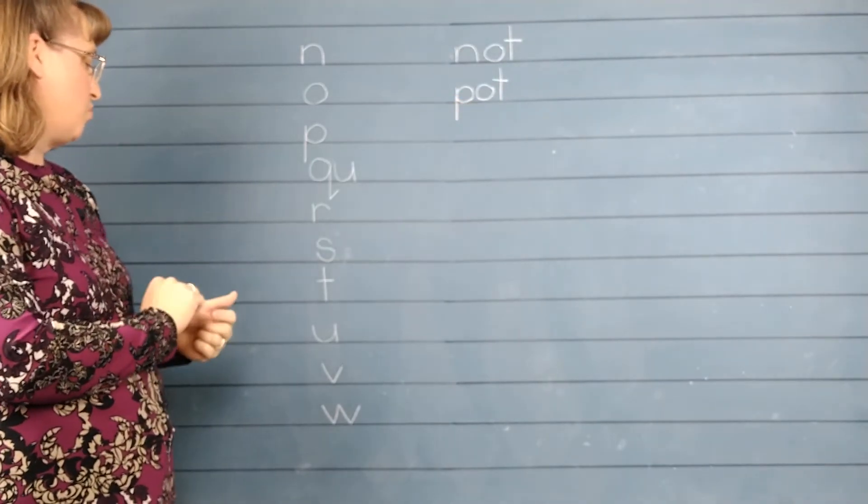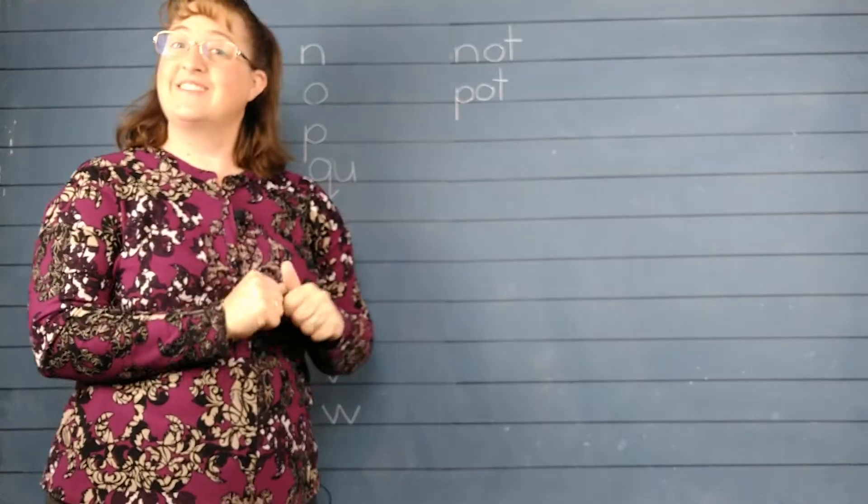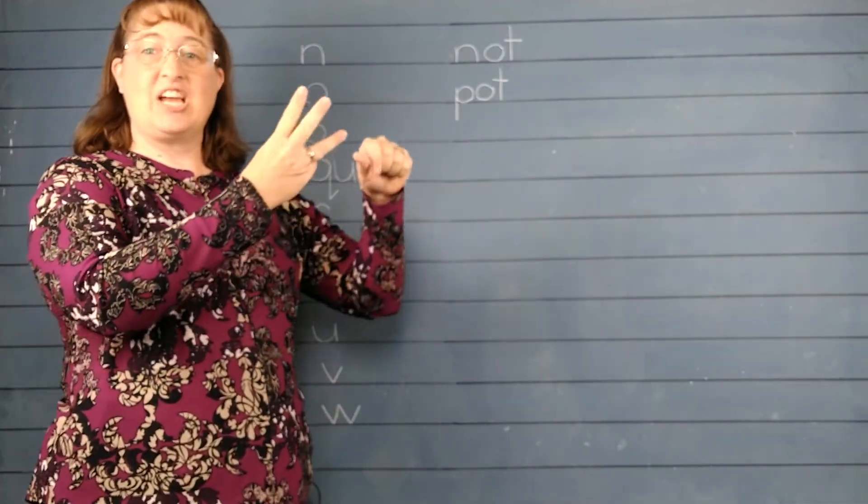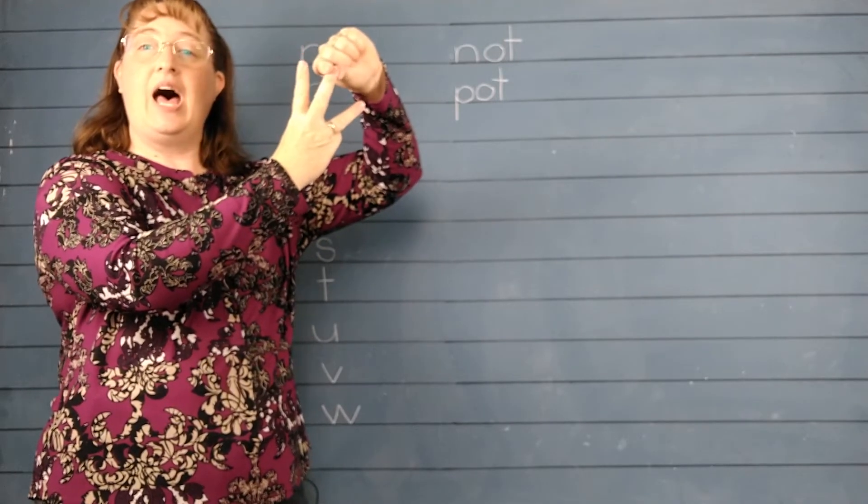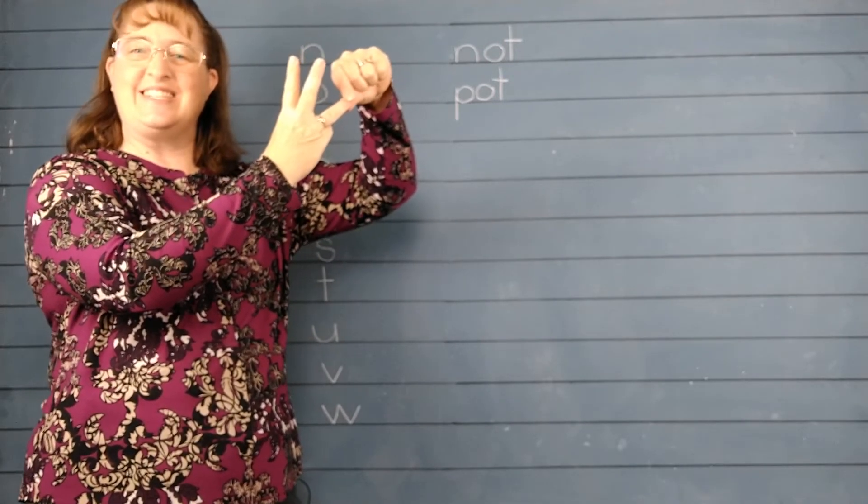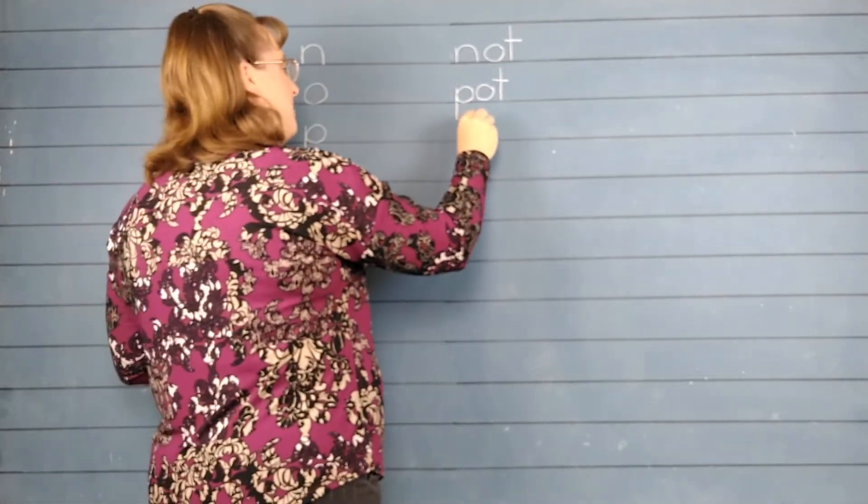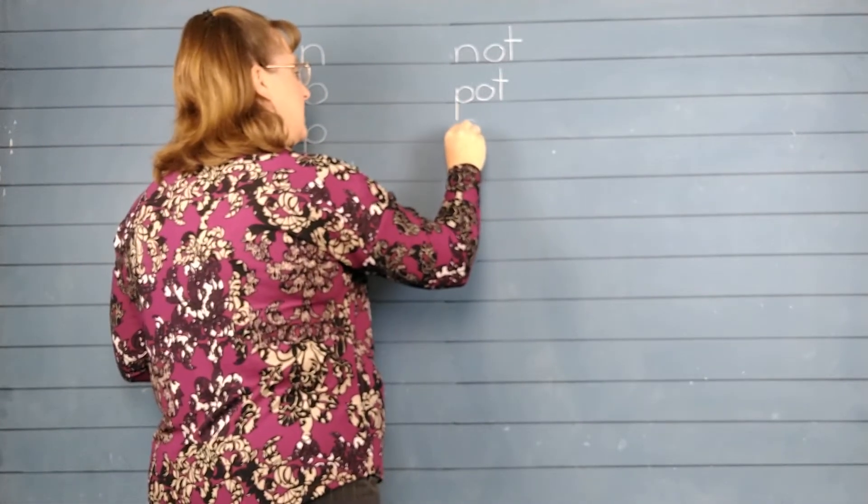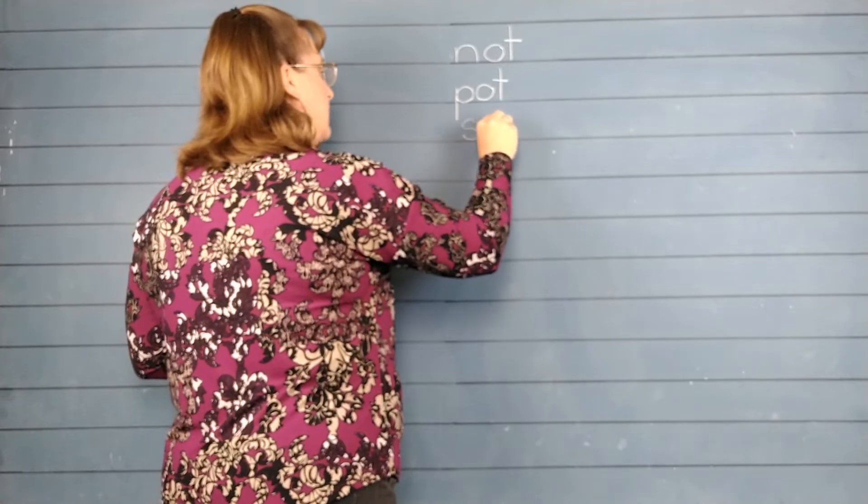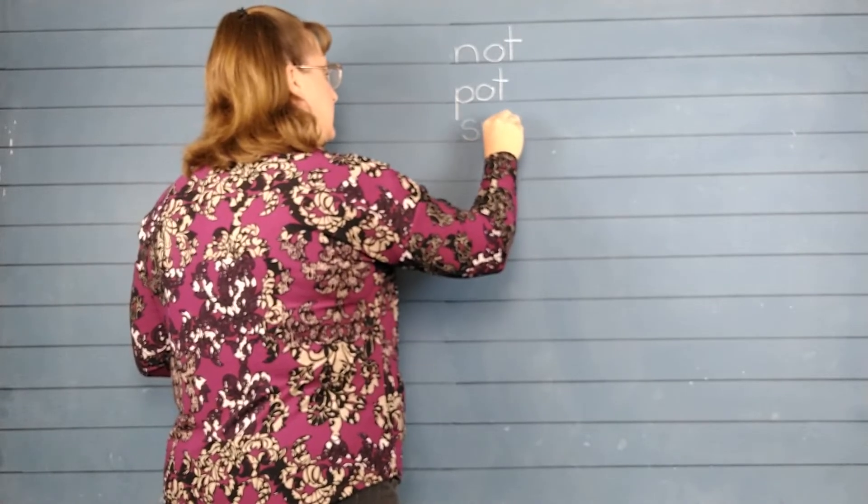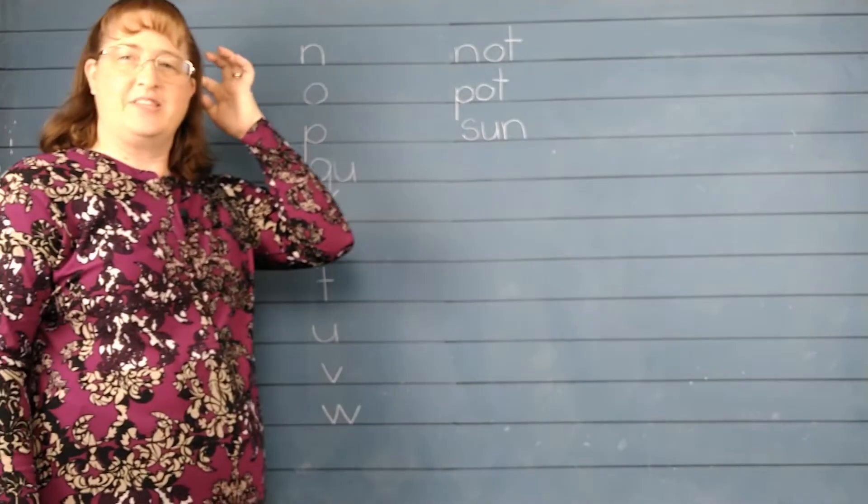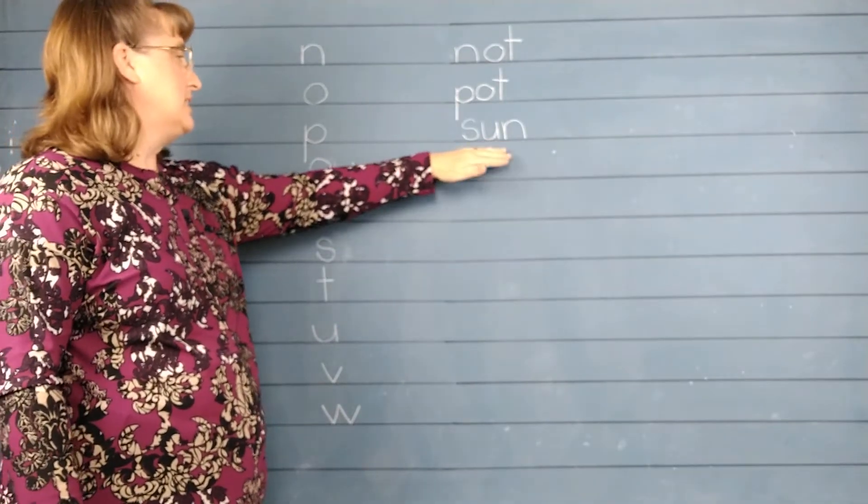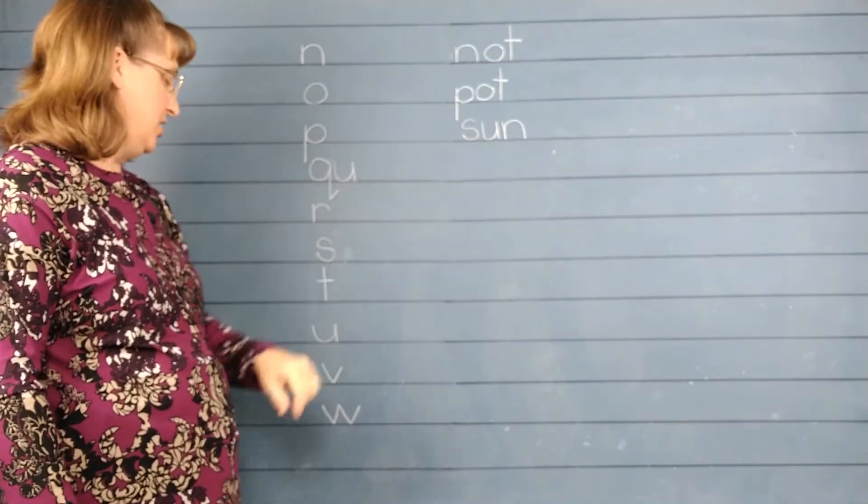Let's write the word sun. The sun is shining bright. Give me the sounds. S-U-N. Let's write it. S-U-N. Read the word with me. Sun. Good job.